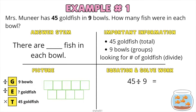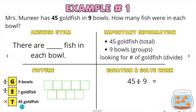Let's go ahead and look at our important information. We have the 45 goldfish — that's the total. We have the 9 bowls — the bowls in this case is our groups. We are looking for the number of goldfish, so we are going to divide.